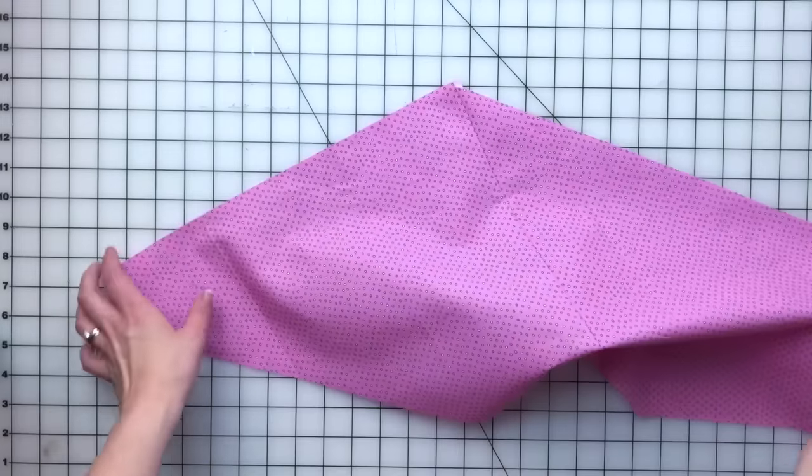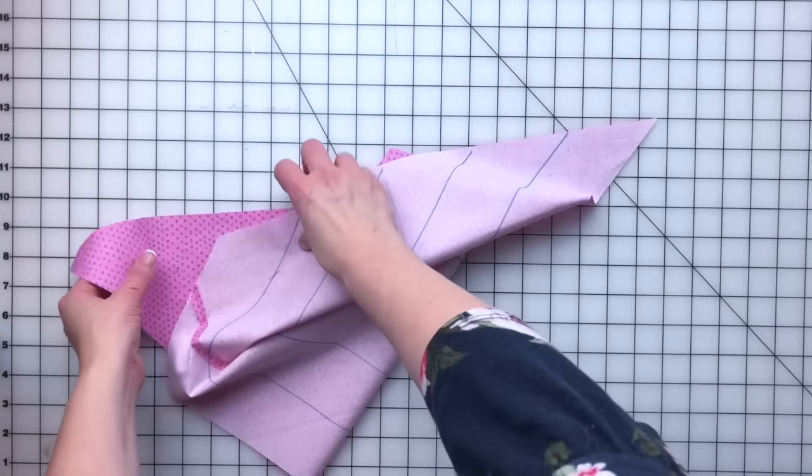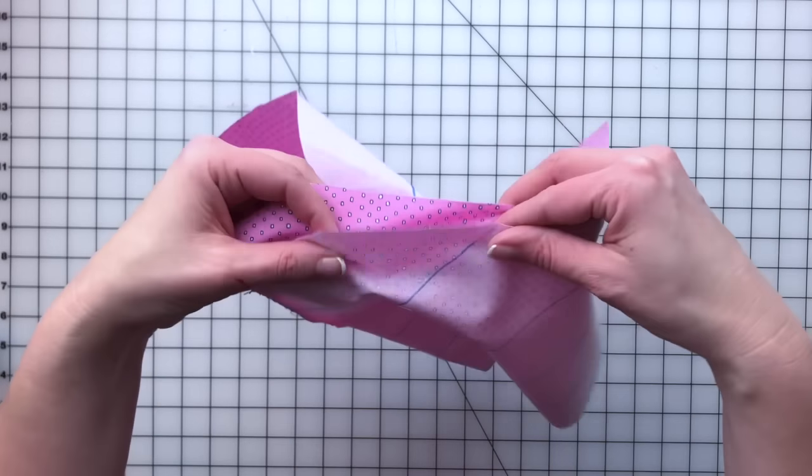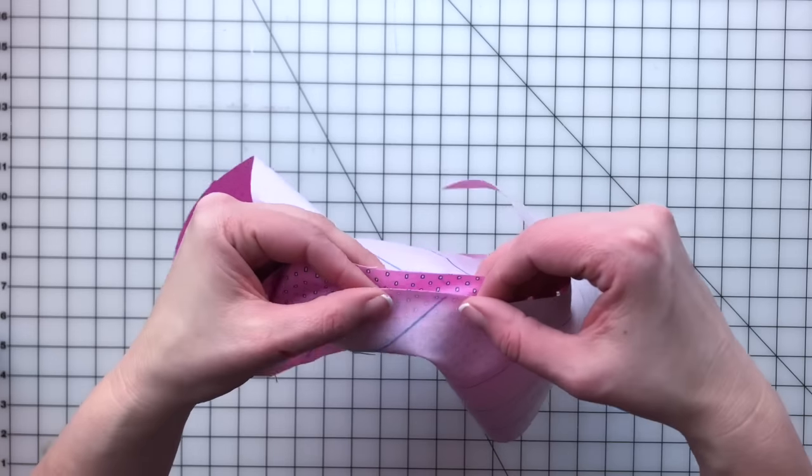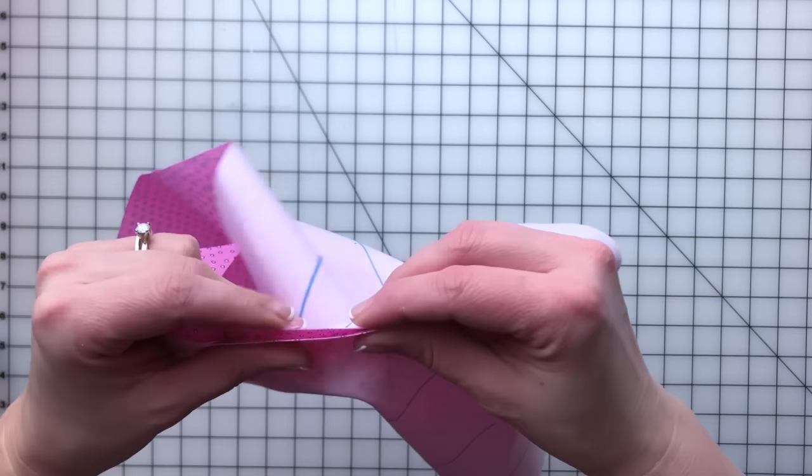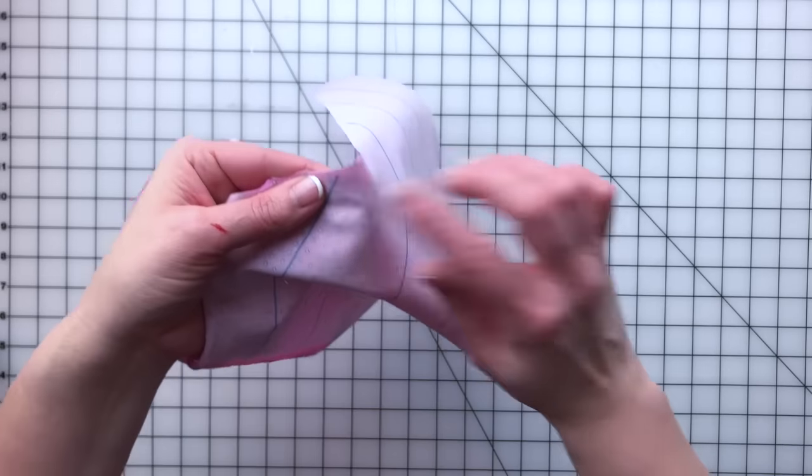Now I'll go ahead and turn my piece over and I'm going to line up the two diagonal lines. But I'm not going to line them up exactly. I'm going to leave a triangle here overlapping. And I need to take care that the lines, this line on this side and this line on this side, they intersect a quarter inch from the edge.